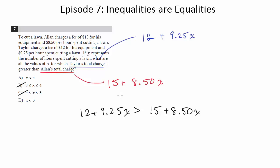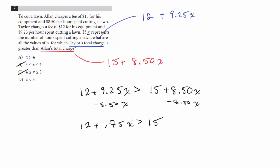Just because it's an inequality doesn't mean it doesn't follow the same rules. So I'm going to subtract 850 from both sides or 850X from both sides. And that's going to get me 12 plus 0.75X is greater than 15. And now I'll subtract 12 from both sides and I get 0.75X is greater than 3.